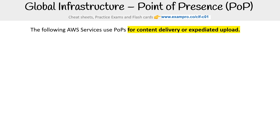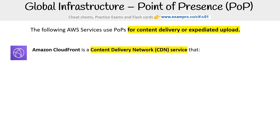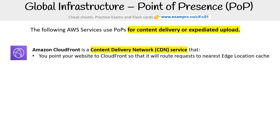Let's take a look at some AWS services that are utilizing PoPs or edge locations for content delivery or expedited uploads. Amazon CloudFront is a content delivery network service. The idea here is you point your website to CloudFront, which will route requests to the nearest edge location cache.